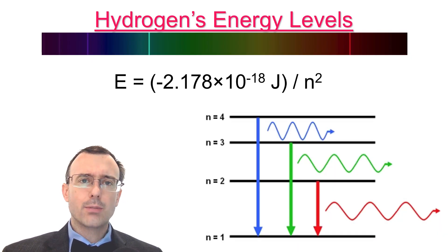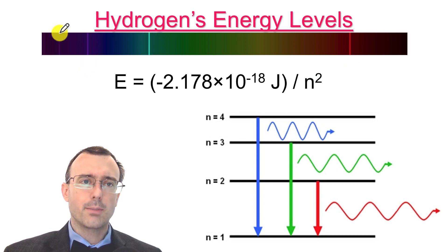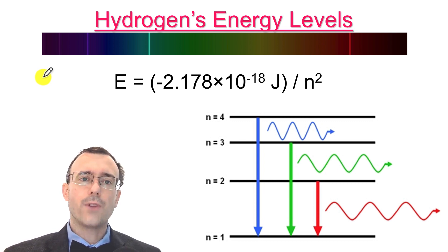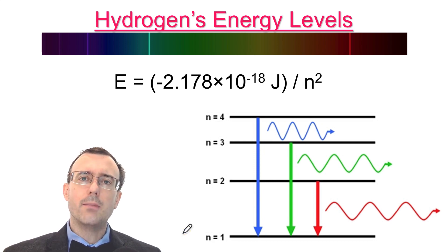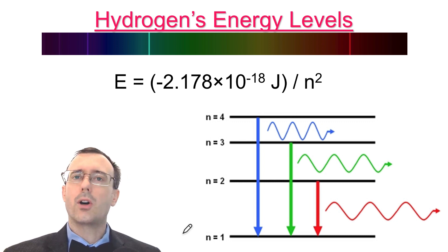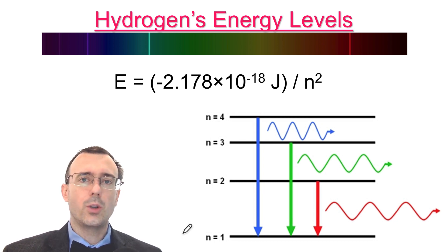Before we begin, let's review what we said about hydrogen's energy levels. Remember that if you put hydrogen in a neon tube, put electricity through it, and look through a prism, you actually see a few lines of light — the red line, the teal line, some purple lines. If you look at the energy of each of those types of light, you find a pattern. You can solve that pattern and get an equation for the energy levels within hydrogen, and solve for all the different energies of the different energy levels in the hydrogen atom.